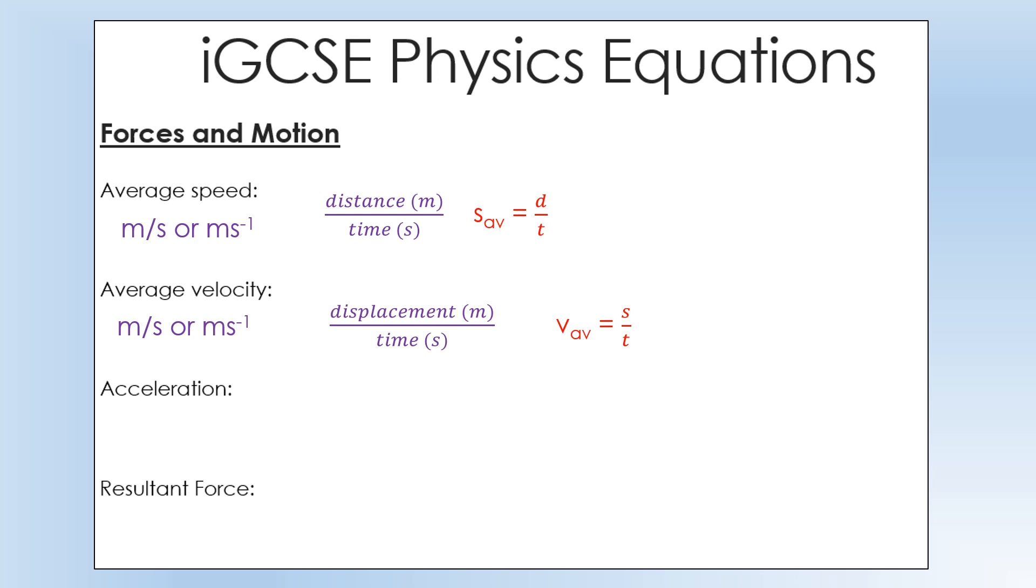The equation for acceleration, or actually more generally the equation for average acceleration, is change in velocity divided by the time taken. That gives you a unit of meters per second squared and you'll sometimes see this equation written as V minus U over T.